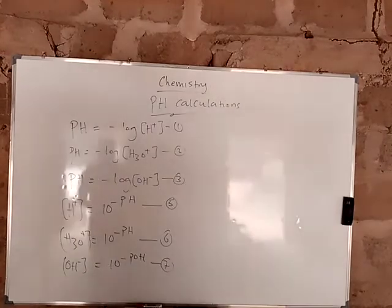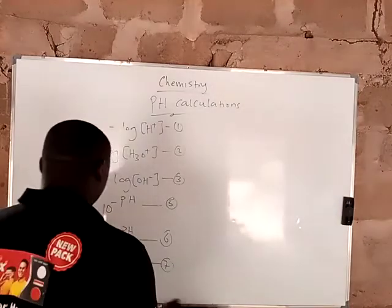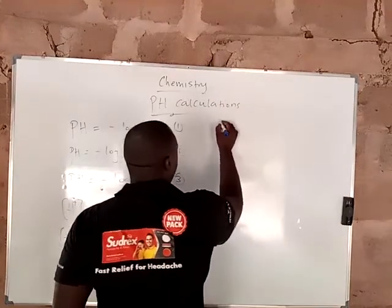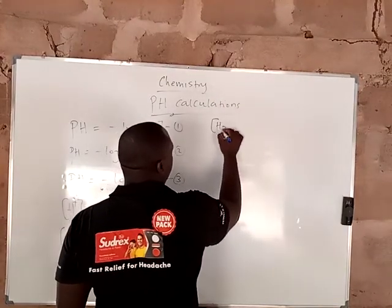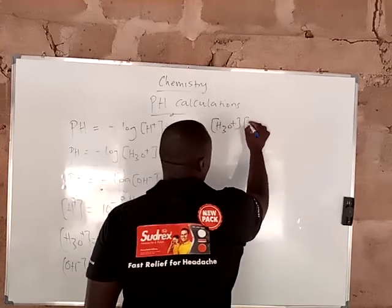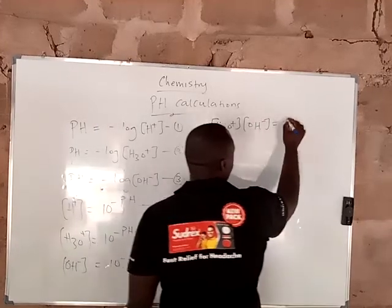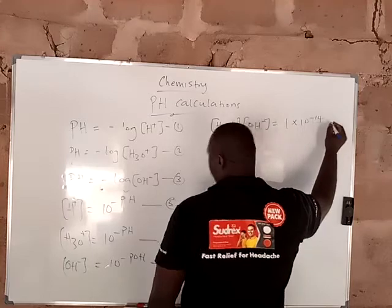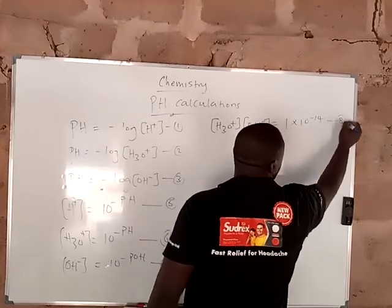Let's continue. You should note this: the hydronium ion concentration and the hydroxyl ion concentration is 1 times 10 raised to the power of minus 14. And this should give you equation 8.